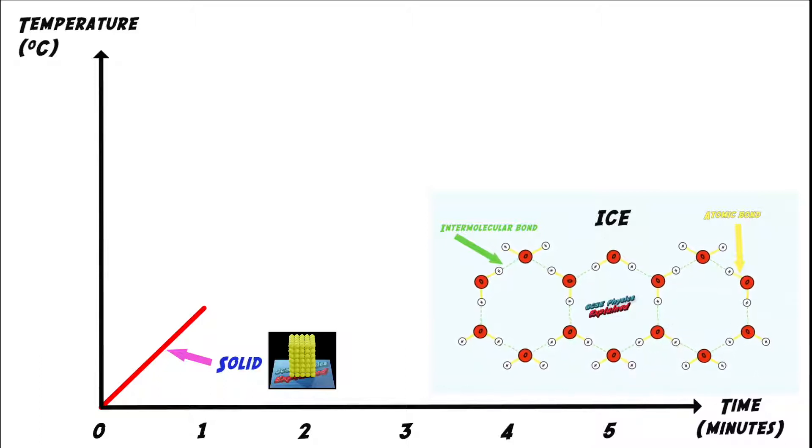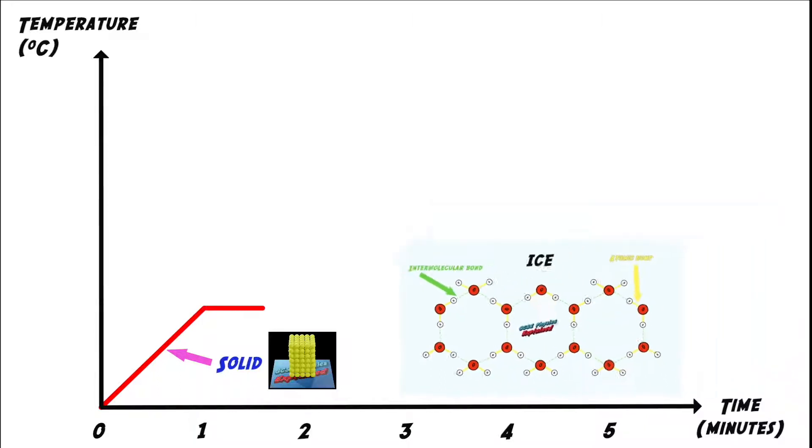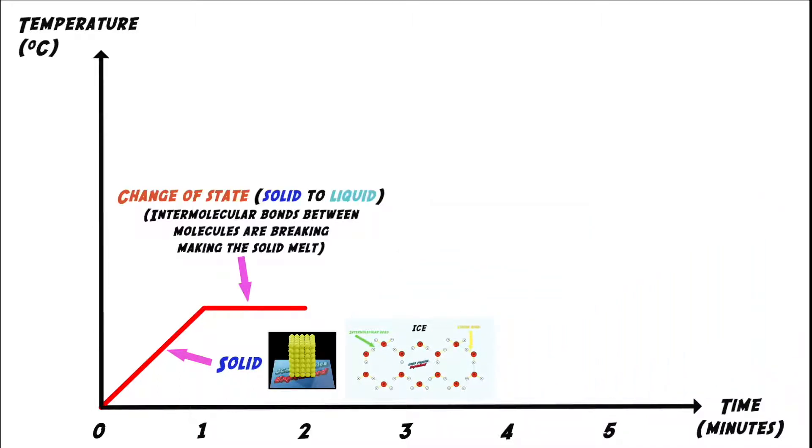This is because the molecules are steadily gaining energy. But then the graph plateaus, which means goes flat. That happens because the solid reaches its melting point and begins to change state.